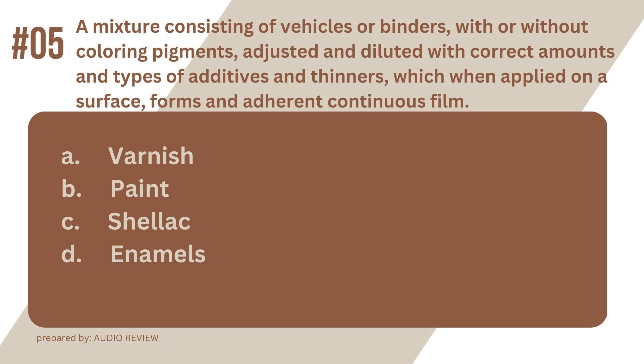Question 5. A mixture consisting of vehicles or binders, with or without coloring pigments, adjusted and diluted with correct amounts and types of additives and thinners, which when applied on a surface, forms an adherent continuous film. A. Varnish. B. Paint. C. Shellac. D. Enamels. The answer? It's B. Paint. A mixture consisting of vehicles or binders, with or without coloring pigments, adjusted and diluted with correct amounts and types of additives and thinners, which when applied on a surface, forms an adherent continuous film. Paint.